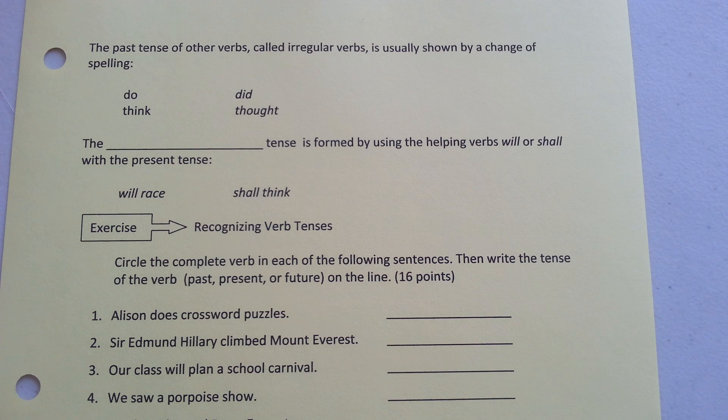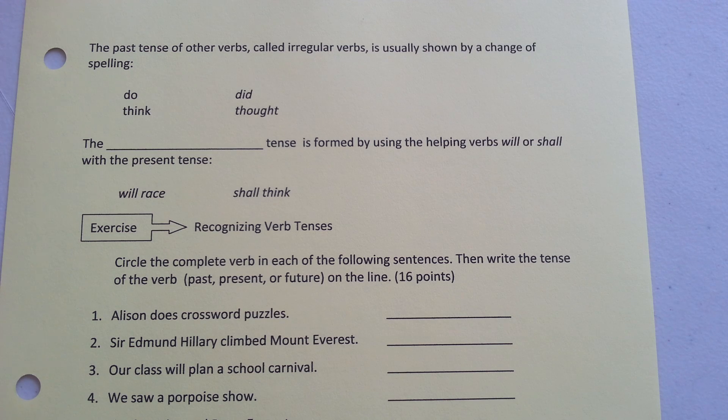The past tense of other verbs, called irregular verbs, is shown by a change of spelling. So do becomes did, think becomes thought.